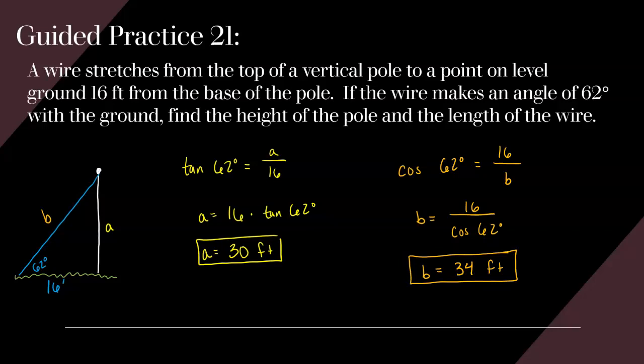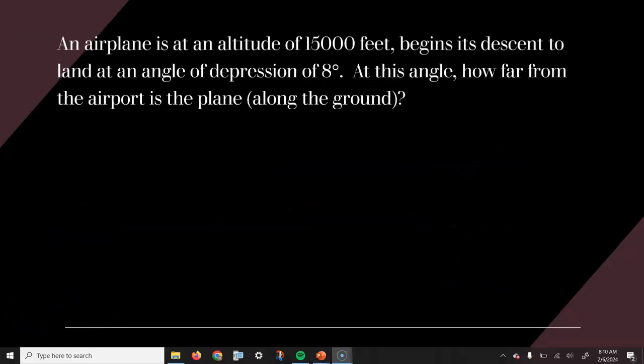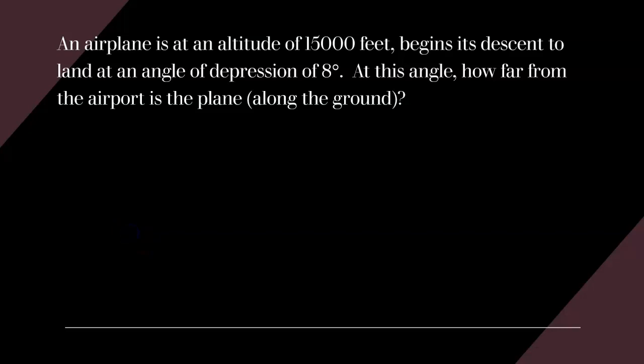I want to talk about one more thing. Let's look at a problem where when we create our triangle, the angle given is outside the triangle. An airplane is at an altitude of 15,000 feet and begins its descent to land at an angle of depression of 8 degrees. How far from the airport is the plane? The distance we're trying to find is the horizontal distance along the ground.